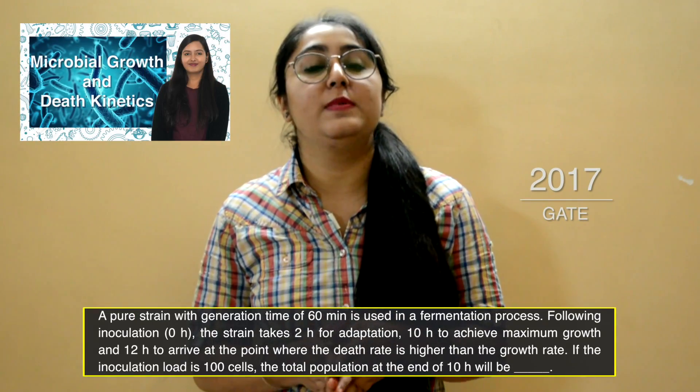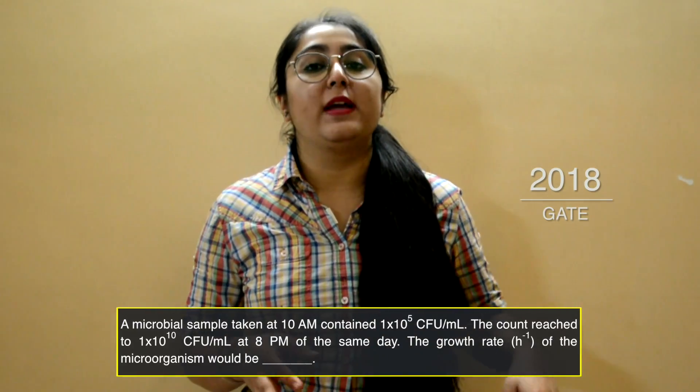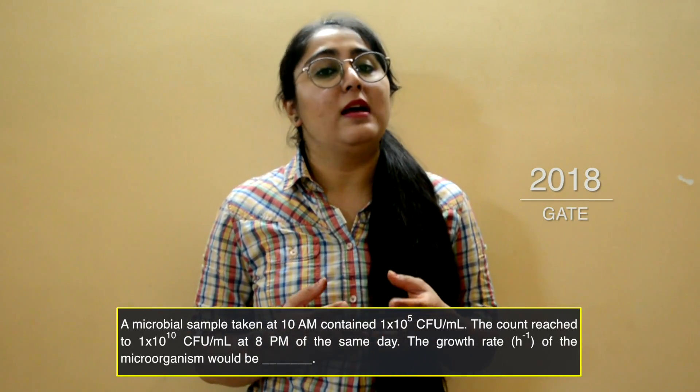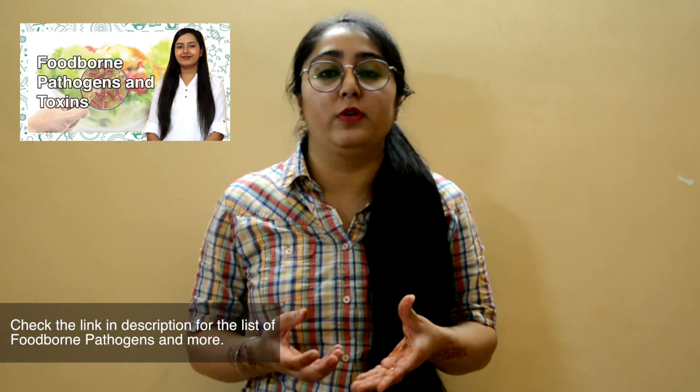Concept number five is food microbiology. Numerical questions on microbial growth kinetics have been repeated in both GATE 2017 and GATE 2018. Microorganisms are important in various ways — for example, microorganisms present in curd, yogurt, and cabbage can be asked, or spoilage microorganisms responsible for spoilage of certain food products such as canned products and meat products can be asked.